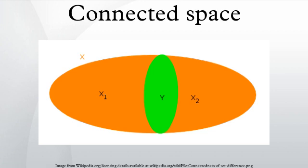Note however that if the path connectedness requirement is dropped from the definition of simple connectivity, a simply connected space does not need to be connected. Yet stronger versions of connectivity include the notion of a contractible space. Every contractible space is path connected and thus also connected. In general, any path connected space must be connected, but there exist connected spaces that are not path connected. The deleted comb space furnishes such an example, as does the topologist's sine curve.